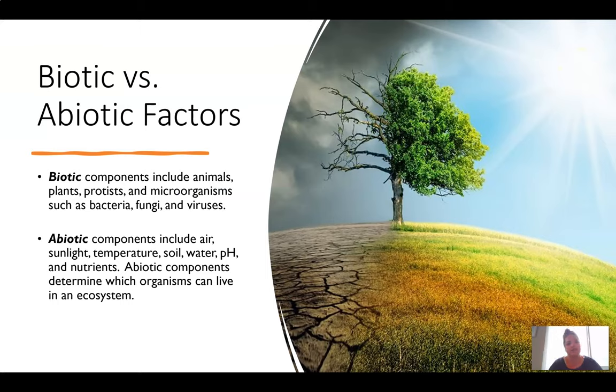So what are biotic versus abiotic factors? Biotic components are animals, plants, microorganisms, bacteria, fungi, anything that is living. Abiotic components include air, sunlight, temperature, soil, rocks, water, pH, all of those things that are non-living are considered the abiotic factors. In order for an ecosystem to thrive, both of those things need to interact with each other.